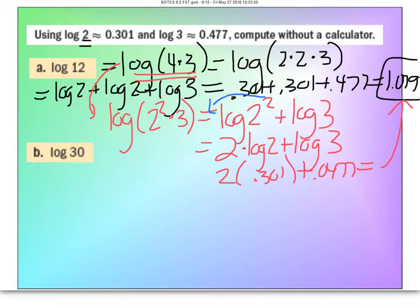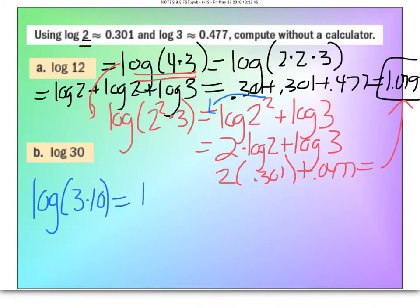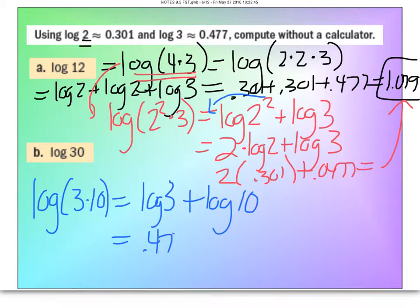For letter B, the log of 30: 30 is 3 times 10. Restate as log of 3 times 10, which gives log of 3 plus log of 10. Log of 3 is 0.477 and log of 10 is 1, so this simplifies to 1.477.